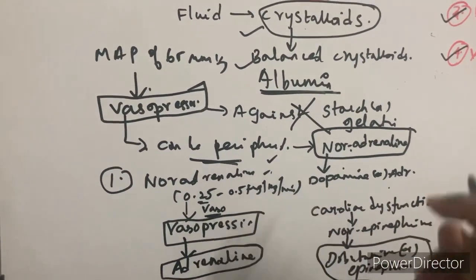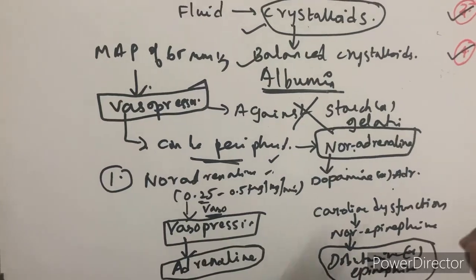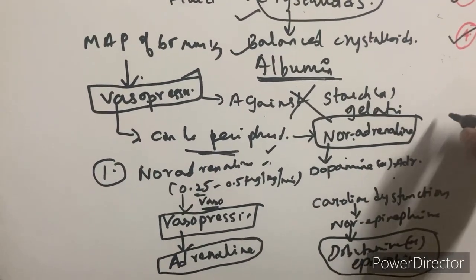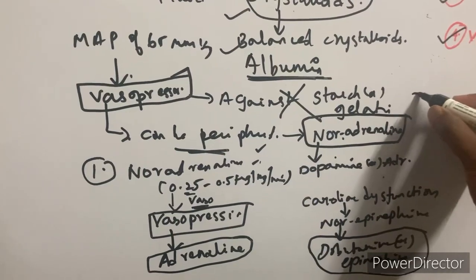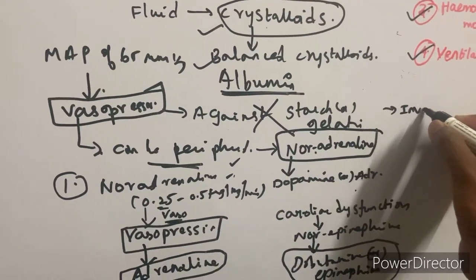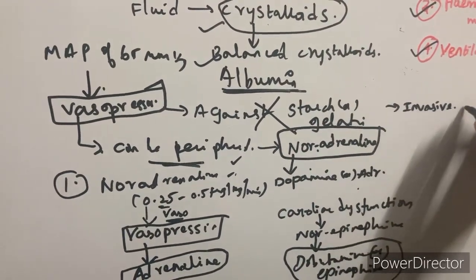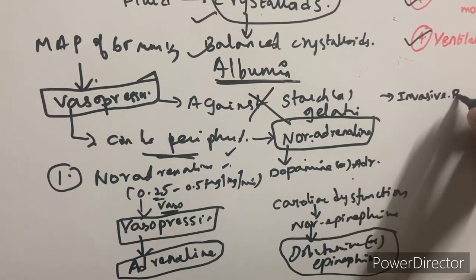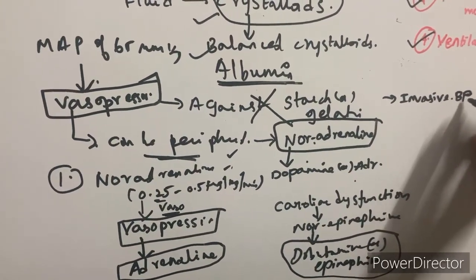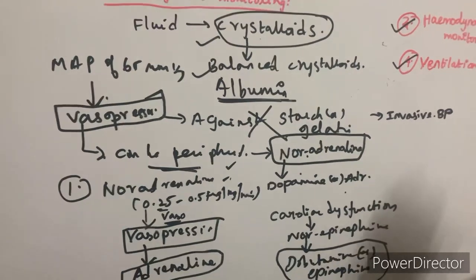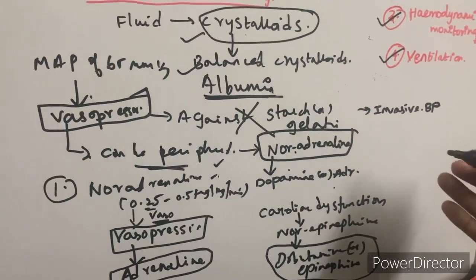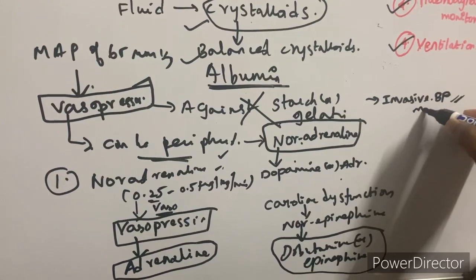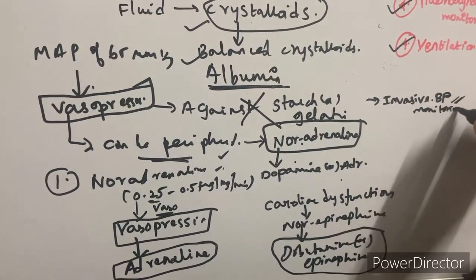Once vasopressors are started, invasive arterial line BP monitoring is necessary for continuous blood pressure recording. Cannulation of the radial artery or femoral artery should be performed, and the target MAP to maintain is greater than 65 mmHg.